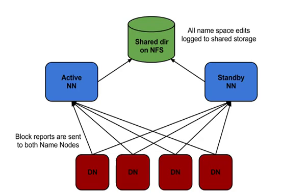So to summarize, name node high availability allows us to have multiple name nodes — one in the active state and one in the standby state. We don't need a secondary name node if we are using a standby name node. This feature is supported from Hadoop 2.0 onwards; previous versions like Hadoop 1.0 do not support this. We will see later in detail how this availability works and what the different components involved are. Thank you for watching, see you in the next video.